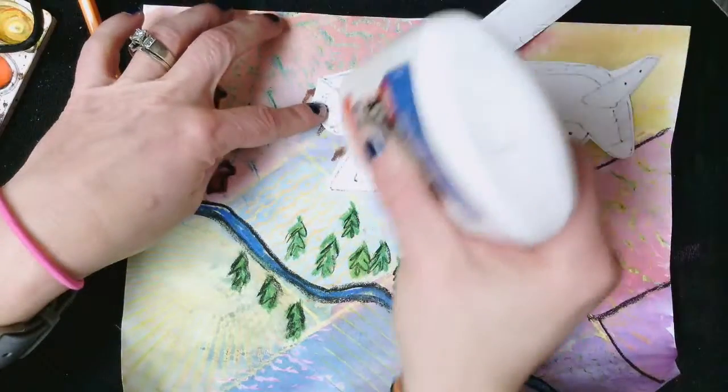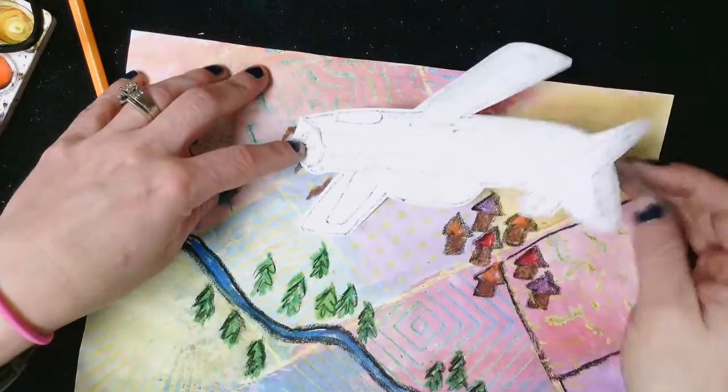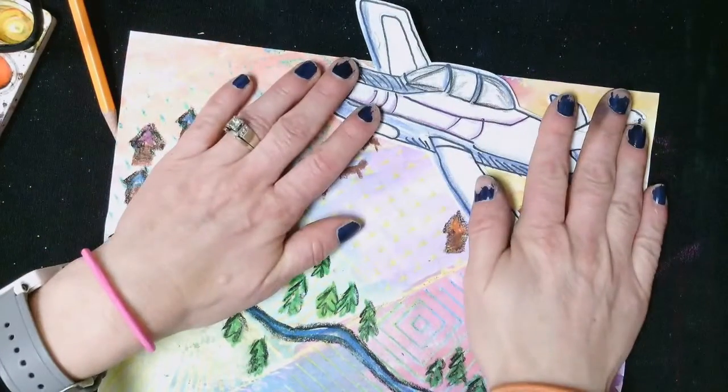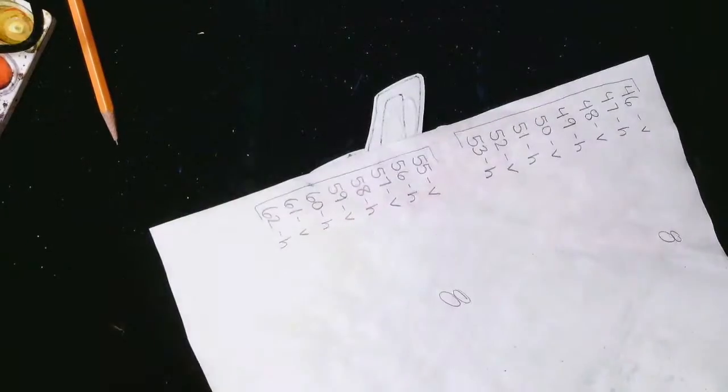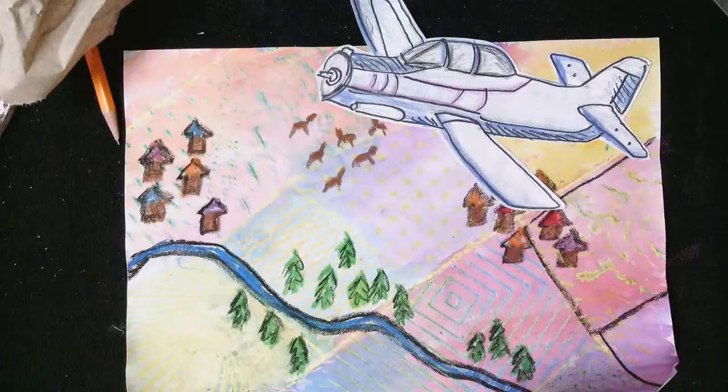Lastly, I'm going to go ahead and take my airplane that I've got cut out and apply it all together and glue that down. I like having my airplane go off the edge of the paper. It kind of makes it look like it just goes on a little bit further than the paper.